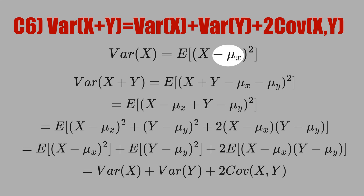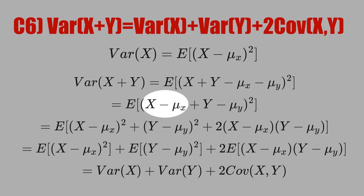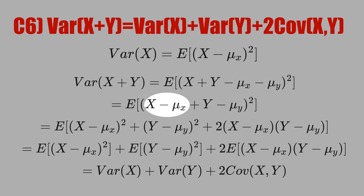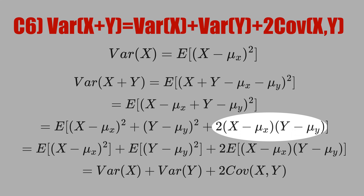Here we subtract the mean of X, and we also have to subtract the mean of Y. Let's reorder the terms to get the deviation of X and the deviation of Y. Now let's square what is inside the parentheses — we square the first term, we square the second term, and then add two times the first term times the second term.